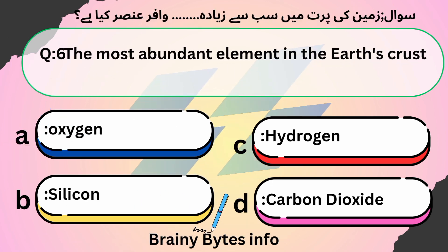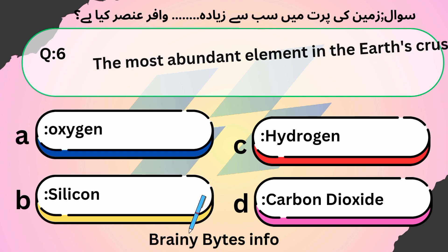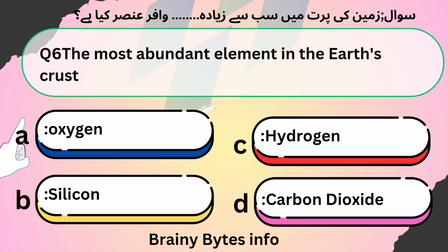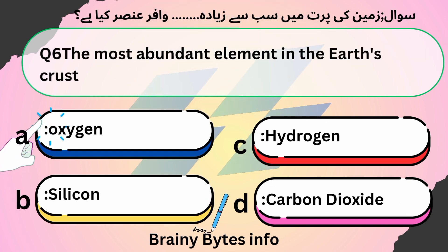The most abundant element in the Earth's crust is: A. Oxygen, B. Silicon, C. Nitrogen, D. Carbon Dioxide. Answer: A. Oxygen.